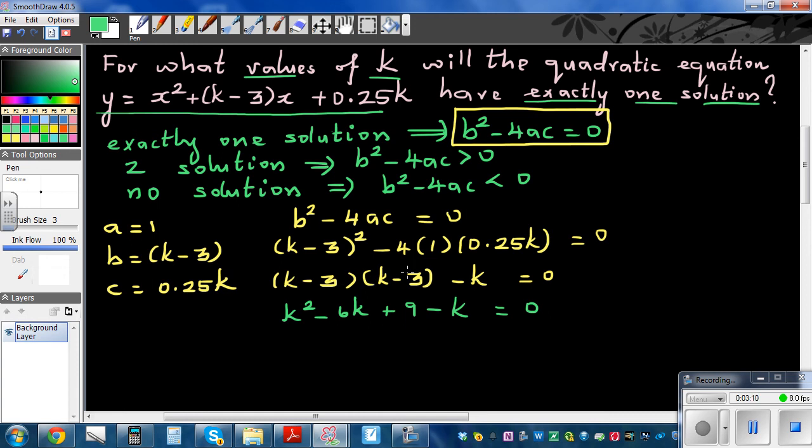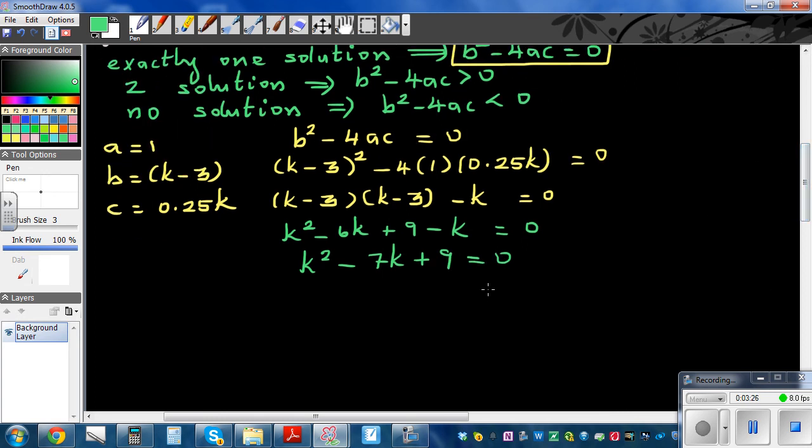So this is k² - 7k + 9 = 0. Now here you can't factorize this because you cannot have two factors which gives you negative 7, so you can either use the quadratic formula or use the calculator.